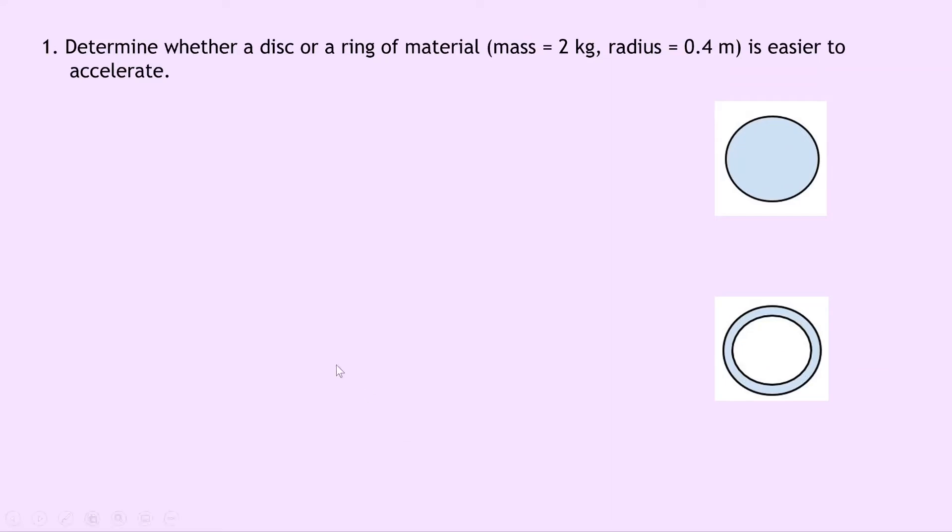So in our one and only question here it says to determine whether a disc or a ring of material of mass 2 kilograms and radius 0.4 meters is easier to accelerate. There's our disc and there's our ring and in both cases they have a mass of 2 kilograms and a radius of 0.4 meters.